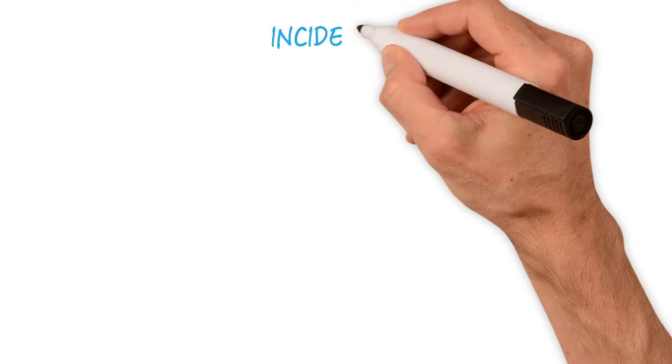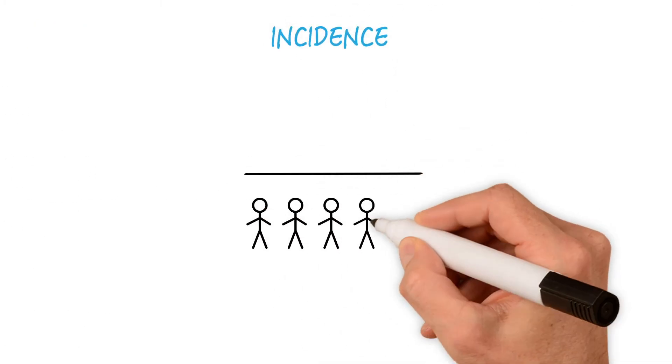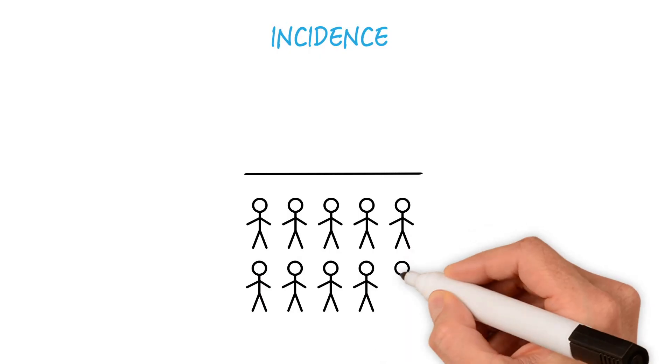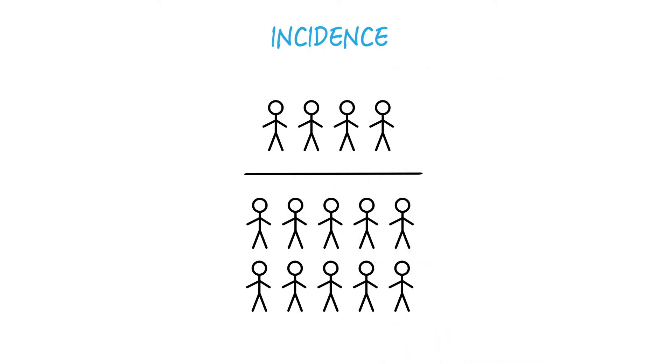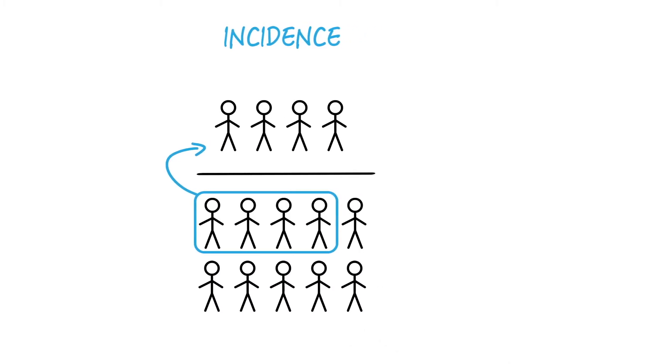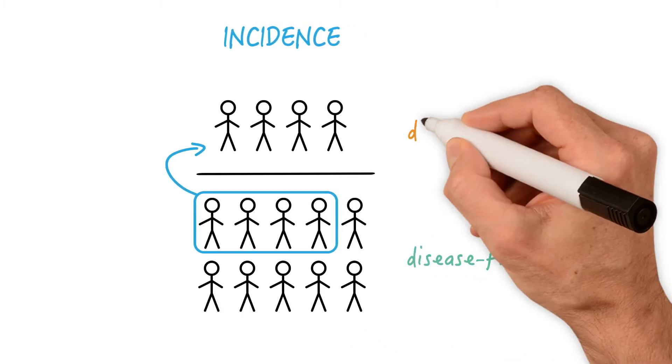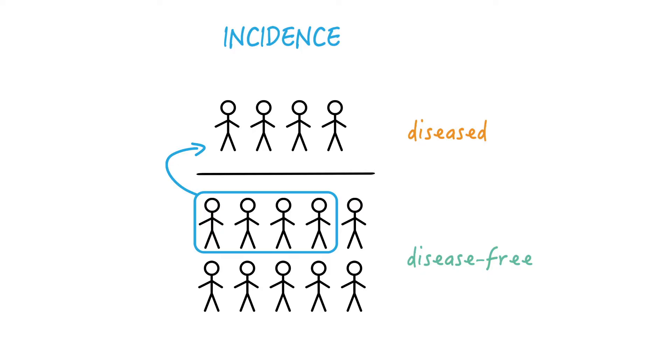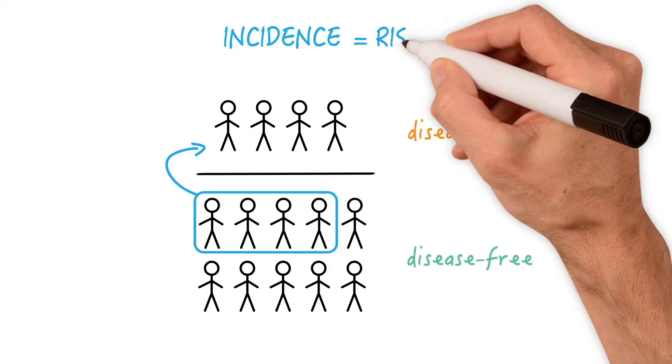What's critical for incidence is that every person in the denominator must have the potential to become one of the people in the numerator. In fact, these four people are part of the denominator. They transition from disease free to diseased. Incidence is a measure of events and therefore a measure of risk.